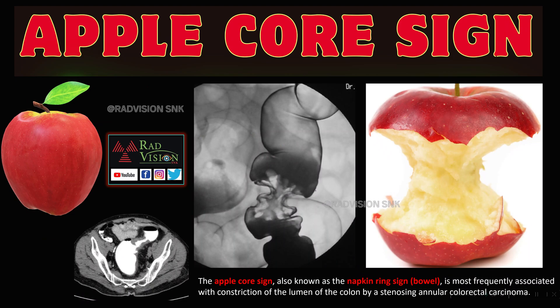This is the apple core sign. Here you can see a double-contrast barium enema typically showing an annular constricting lesion with luminal narrowing in the colon, which mimics an apple core. This is also known as the napkin ring sign, and is most frequently associated with constriction of the lumen of the colon by a stenosing annular colorectal carcinoma.